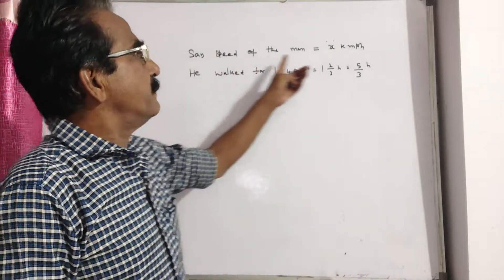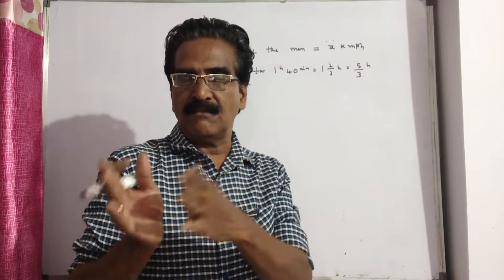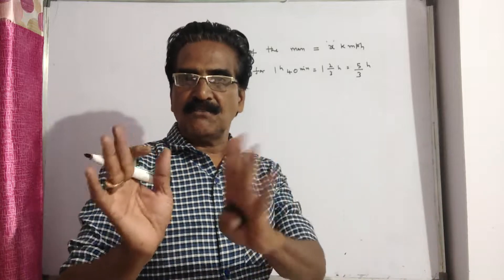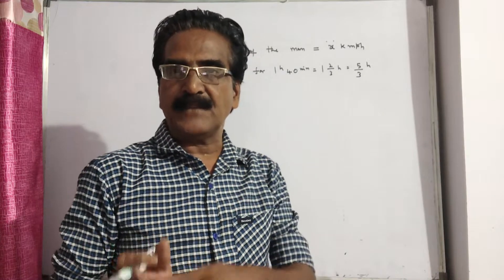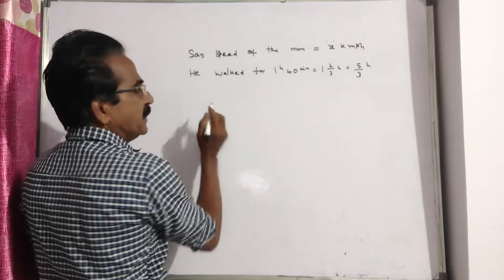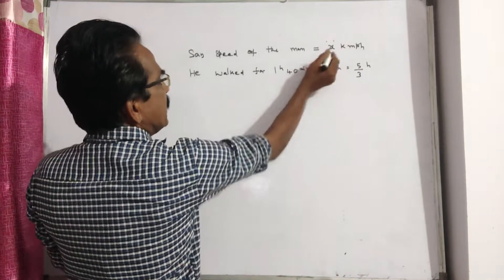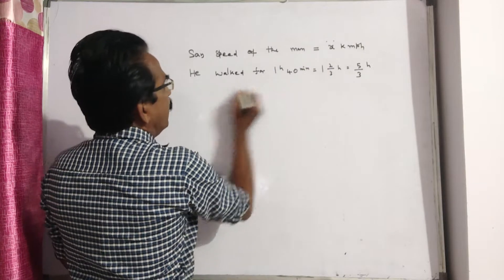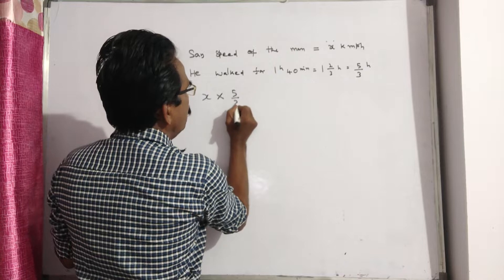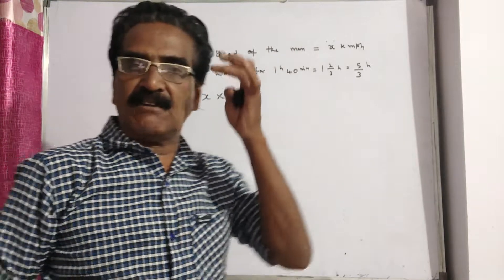See friends, say the speed of the man is x kmph. He walked for 1 hour 40 minutes, that is, he walked for 5 by 3 hours. So what is the distance covered by him in 5 by 3 hour? Velocity into time. So the distance covered by him in 1 hour 40 minutes is equal to velocity into time, which is 5x by 3.